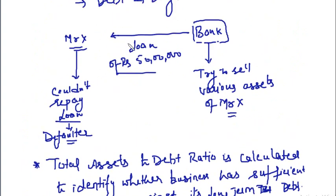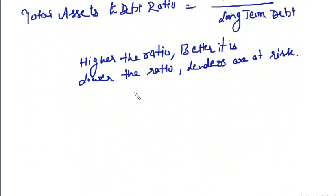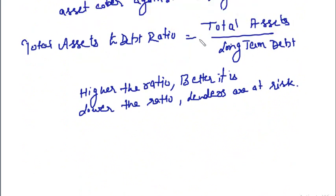Total assets to debt ratio is very useful for persons who have advanced money to the business. It is very important for them to know whether they are safe or at a very high risk. If the ratio is quite low, they are at a high risk situation — in that case the assets will be less than the long-term debts.